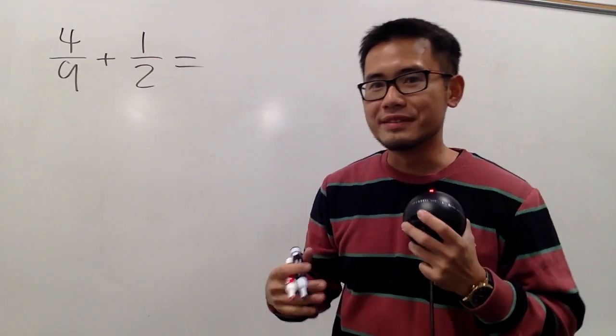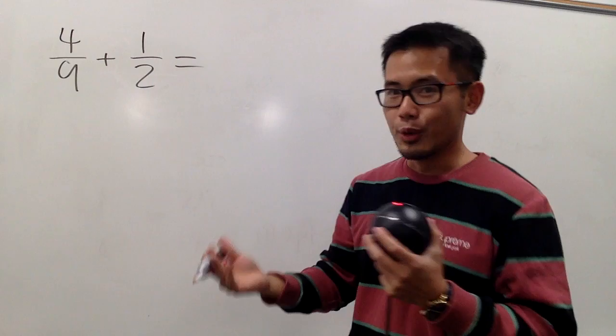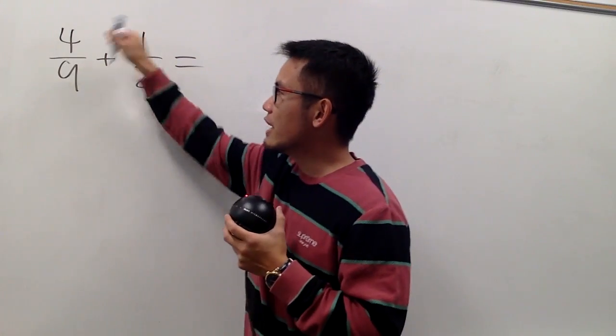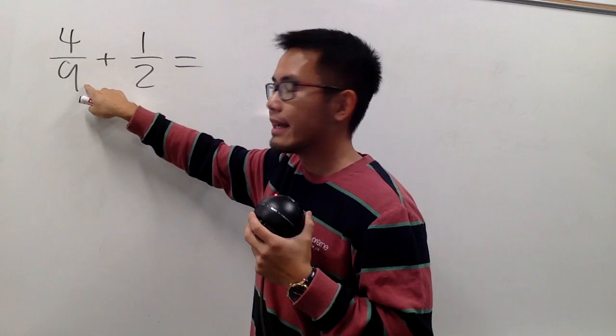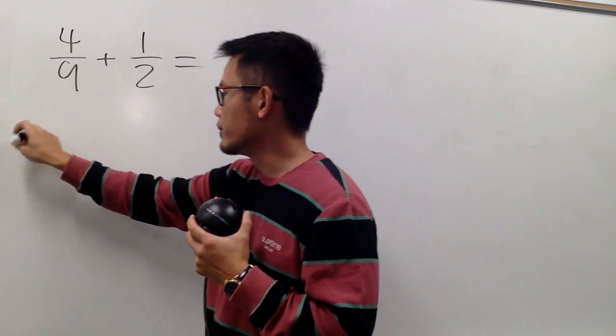And let's also imagine we have some Oreo cookies, and we all like Oreo cookies, right? So, if you look at 4 over 9, let's imagine we have a total of 9 Oreo cookies, and let me just draw this for you guys.